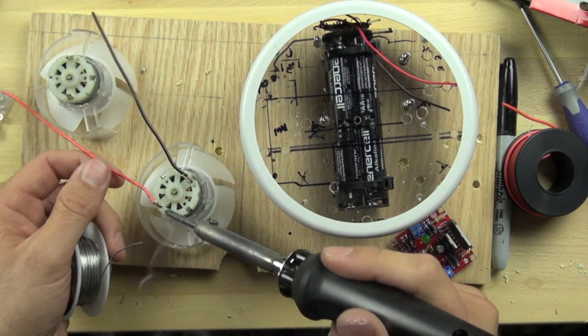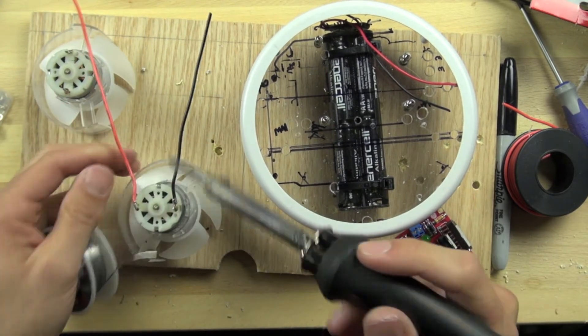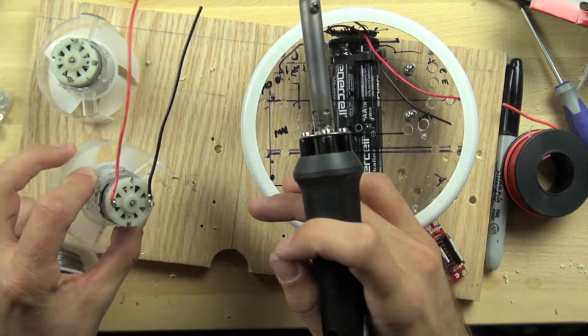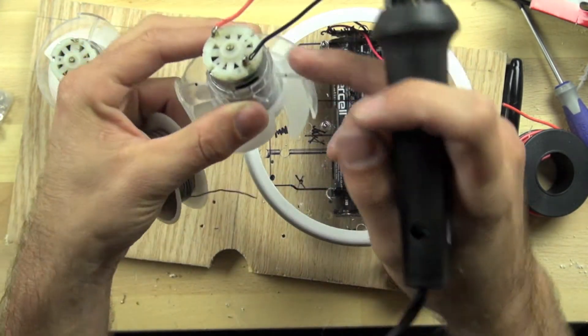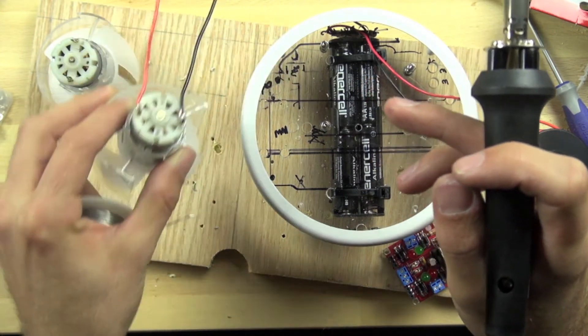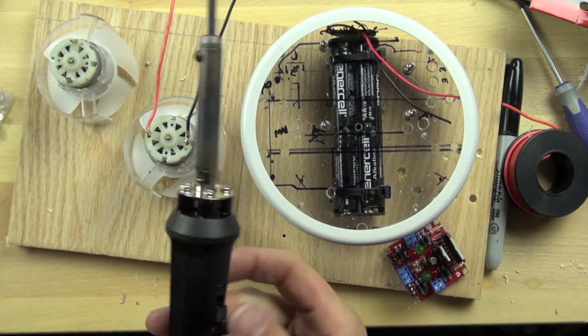There we go. Oop, that one moved just a little bit, that's okay. So you can see that there's a complete contact with the hair dryer motor.